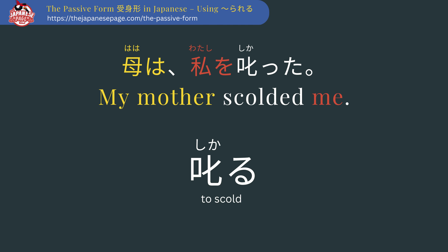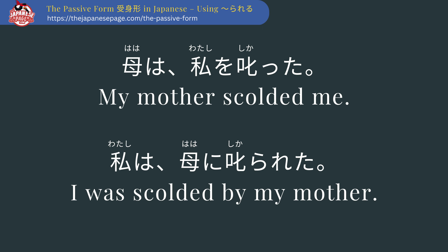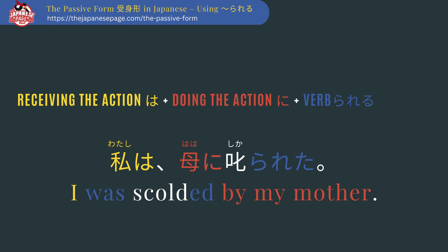Now let's use the passive form. 私は母に叱られた — 'I was scolded by my mother.' In the passive sentence, the topic is the one receiving the scolding, and the one doing the scolding is marked with ni. Here's the format of a typical passive sentence: receiving the action は + doing the action に + verb with rareru.